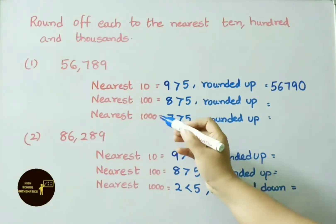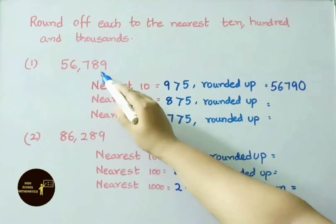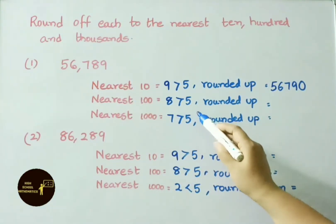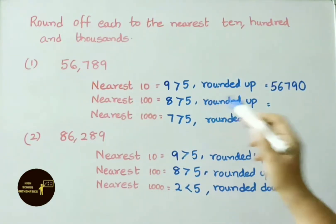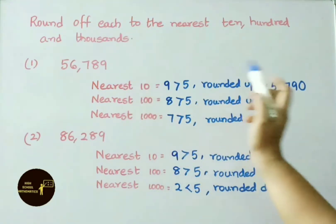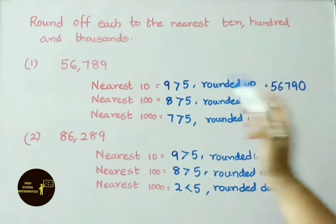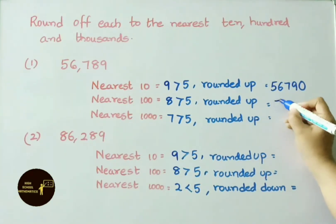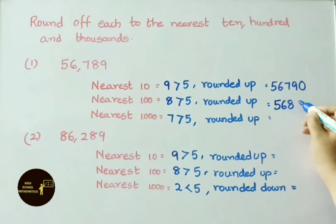Nearest 100 for 56,789: the digit to the right of the 100s place is 8. Since 8 is greater than 5, we round up. We make 89 into 00, and 7 becomes the next hundred — that is 8. So the answer is 56,800.